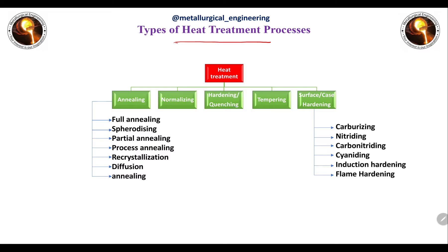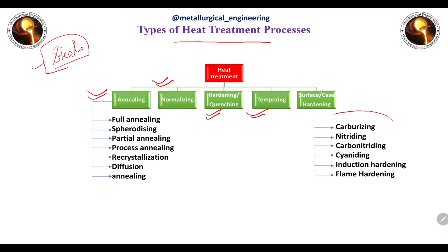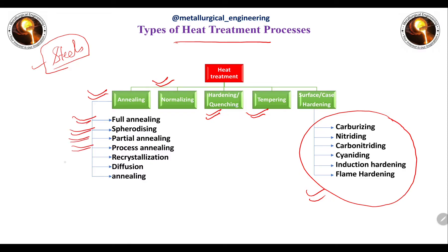The different types of heat treatment are discussed here primarily in terms of steels, since steel is the most widely used alloy with a wide range of applications. Heat treatment for steels is classified into different types: first is annealing, second is normalizing, third is hardening or quenching, fourth is tempering, and there is also surface case hardening, which is used only to improve surface properties. Annealing itself is further classified into full annealing, spheroidizing annealing, partial annealing, recrystallization annealing, and diffusion annealing.